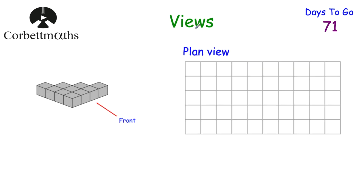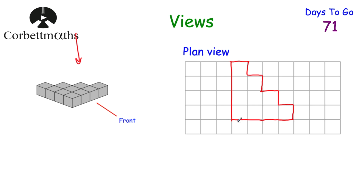Now let's look at Views and Elevations. When given a three-dimensional shape, you might be asked to draw the plan view — which I like to think of as the bird's eye view, looking down from the top. You might also be asked for the front elevation or the side elevation. For the plan view of a staircase-like shape: looking down from above, you would see a shape with the front across, the left-hand side going up, then lines going across and down like steps. That would be the plan view.